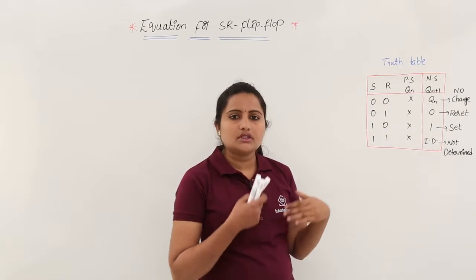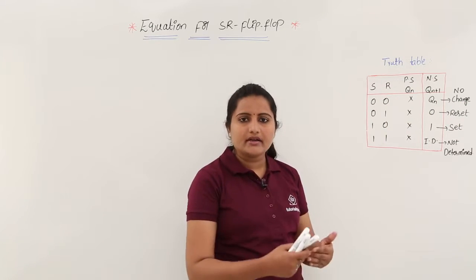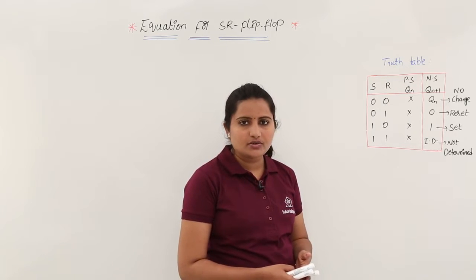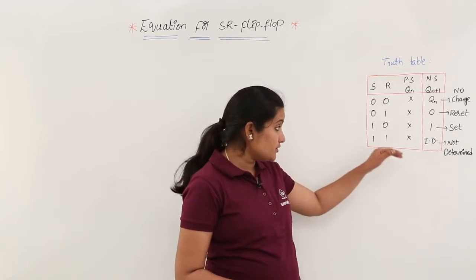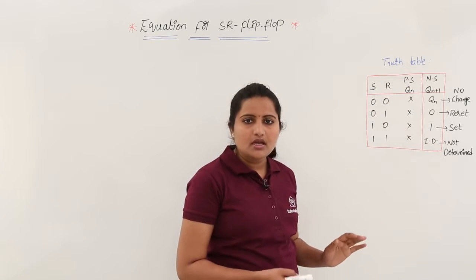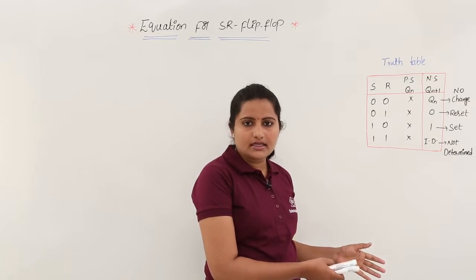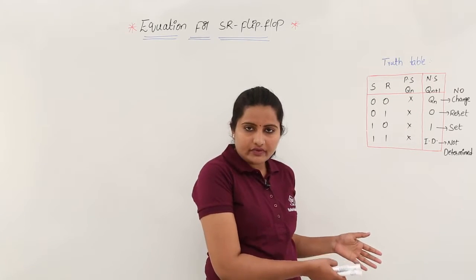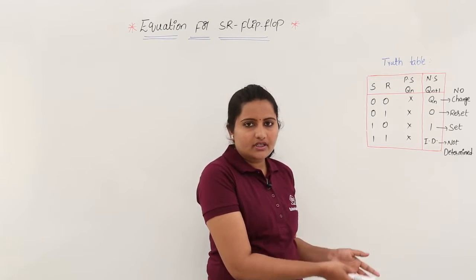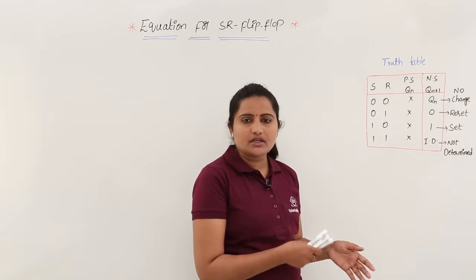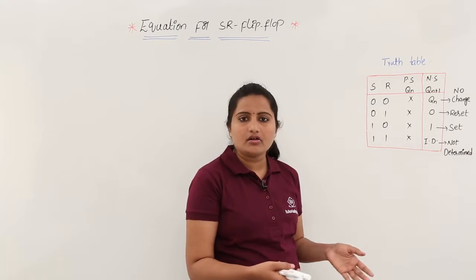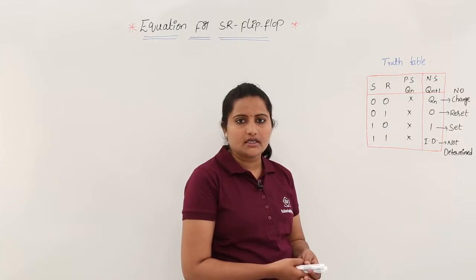Indeterminate means both the next state and its complement are getting the same values. That is why we are not using that state, but we need to include it in the truth table because for that combination, your circuit is going to get into an undetermined state.